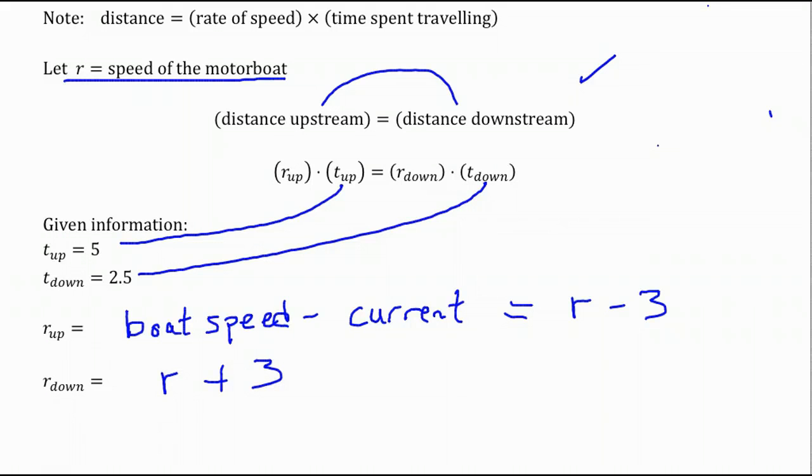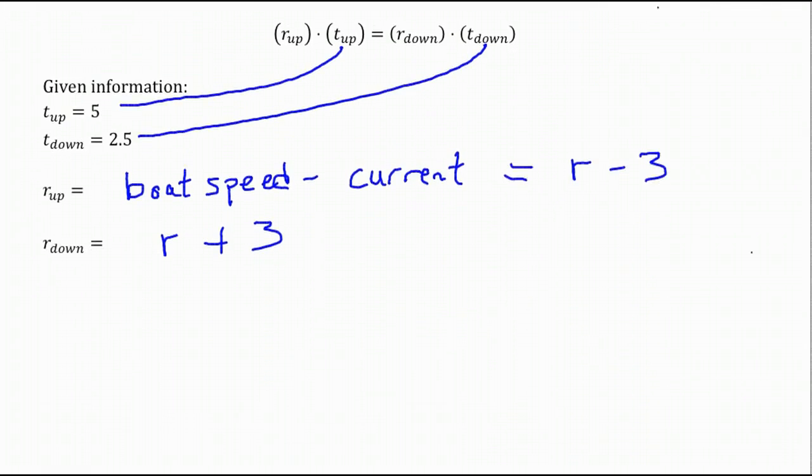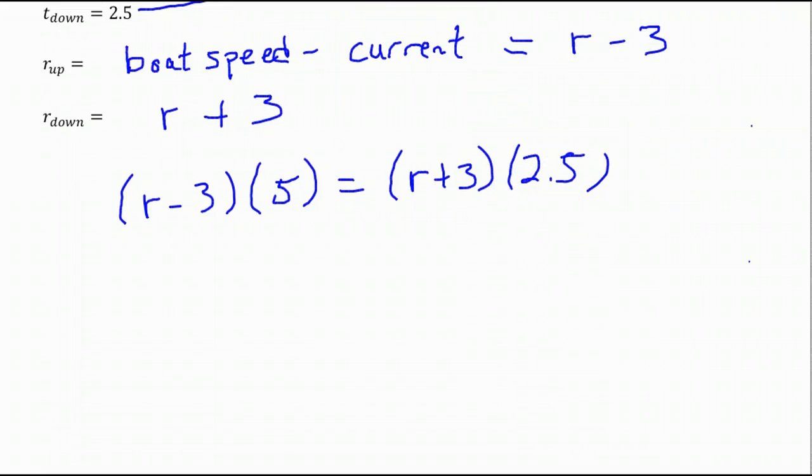Similar for the rate downstream, this time we're going with the current, so it's going to add to our speed. We're going to have r plus 3. So we're going to take r minus 3 and put it in for the rate upstream, and we know it took us 5 hours. And then that's going to equal the rate of speed downstream for the boat, which is r plus 3, times the length of time it took, which is 2.5.